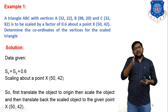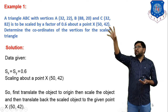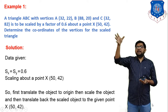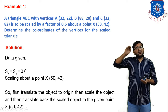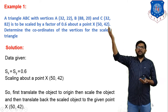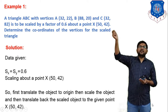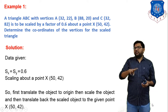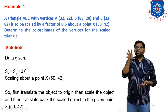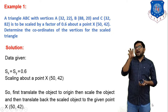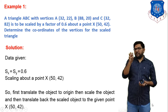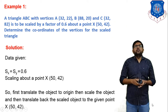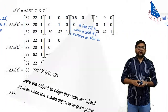So we have to perform three operations total. First, translate the object to the origin. Second, perform scaling. Third, translate back to the original position. T indicates translation to the origin, S indicates the scaling matrix, and T-inverse indicates the inverse translation back.